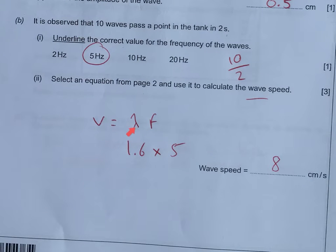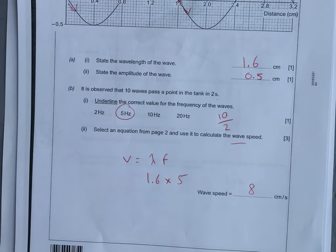We're going to use the formula v equals lambda, which is wavelength, times frequency to get our wave speed. So wave speed is 1.6, your wavelength from there, and then your frequency from there.